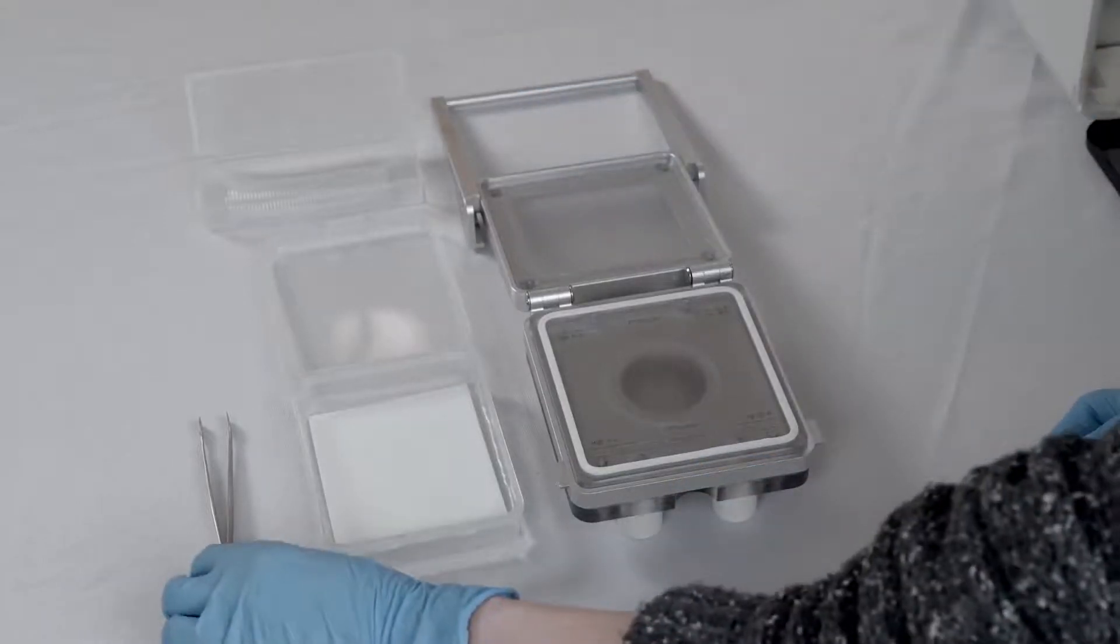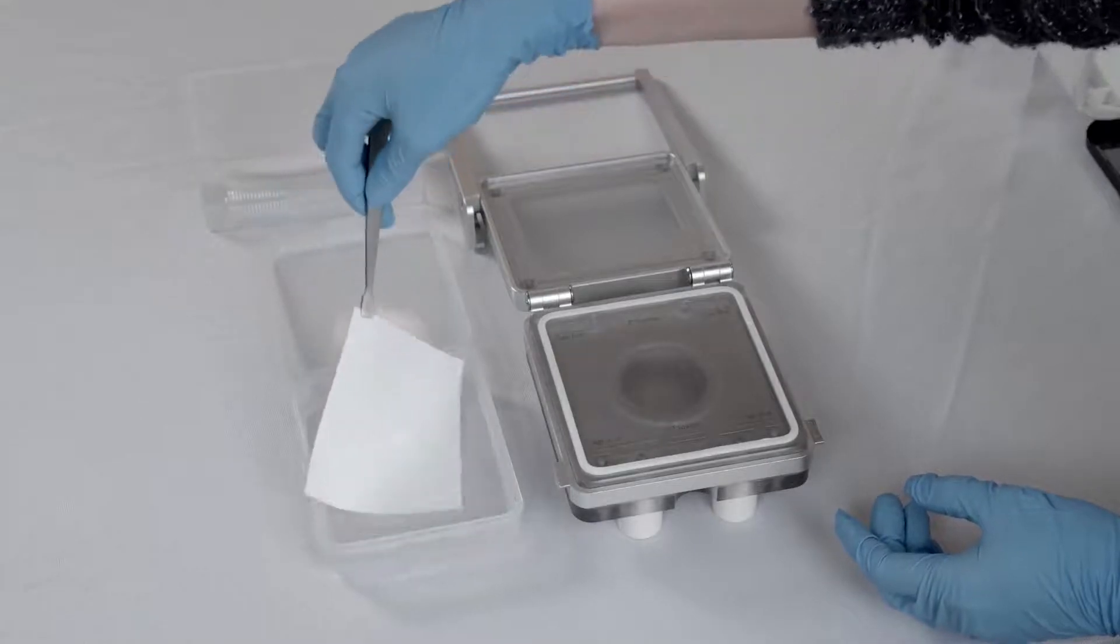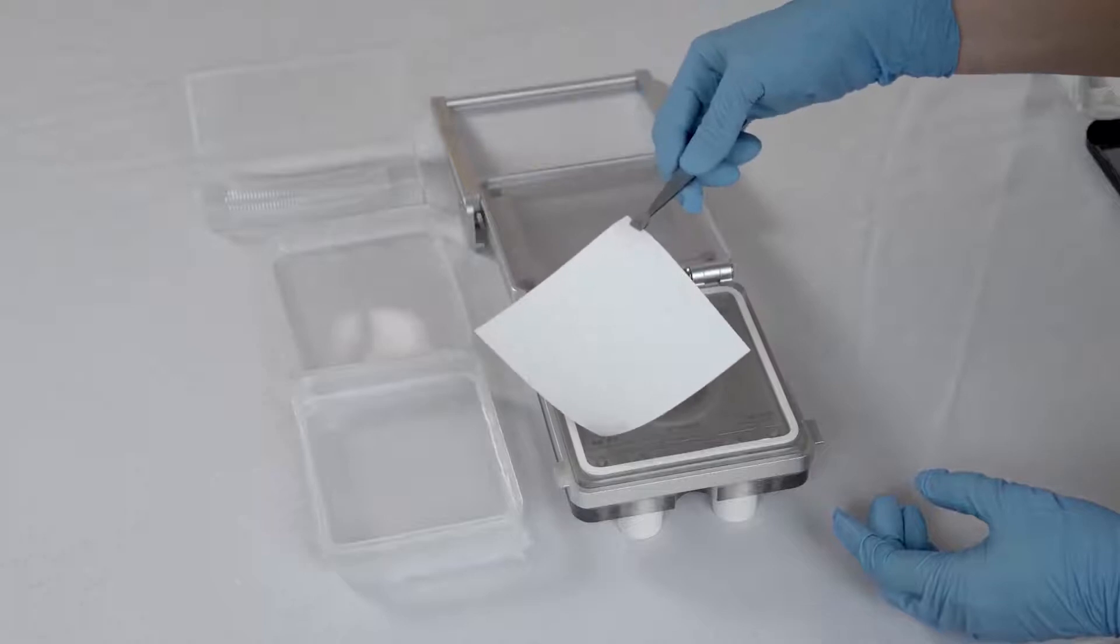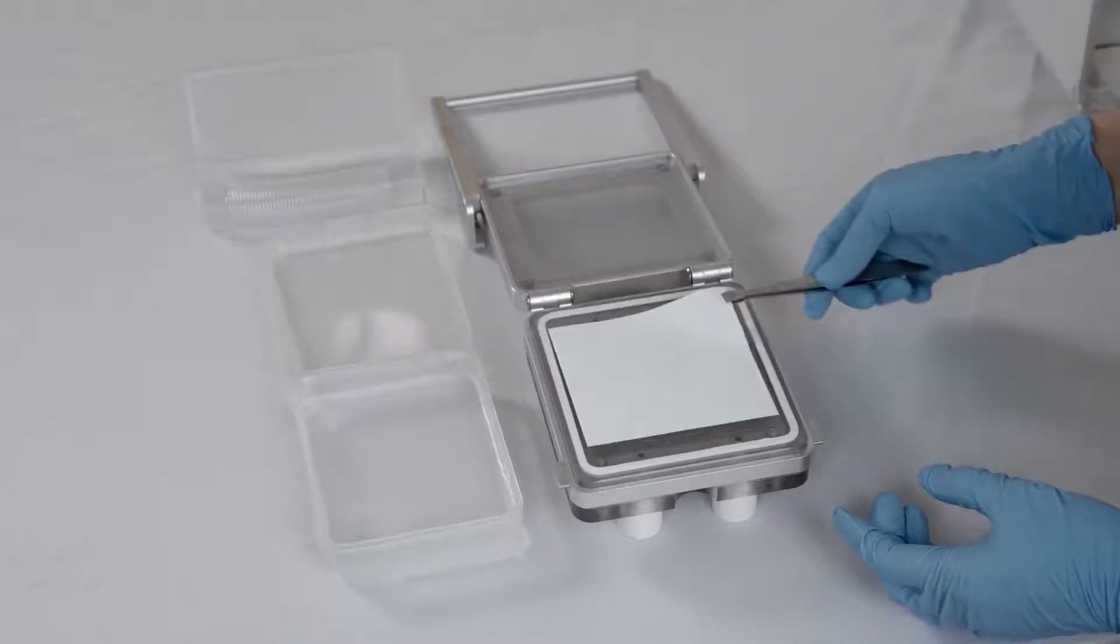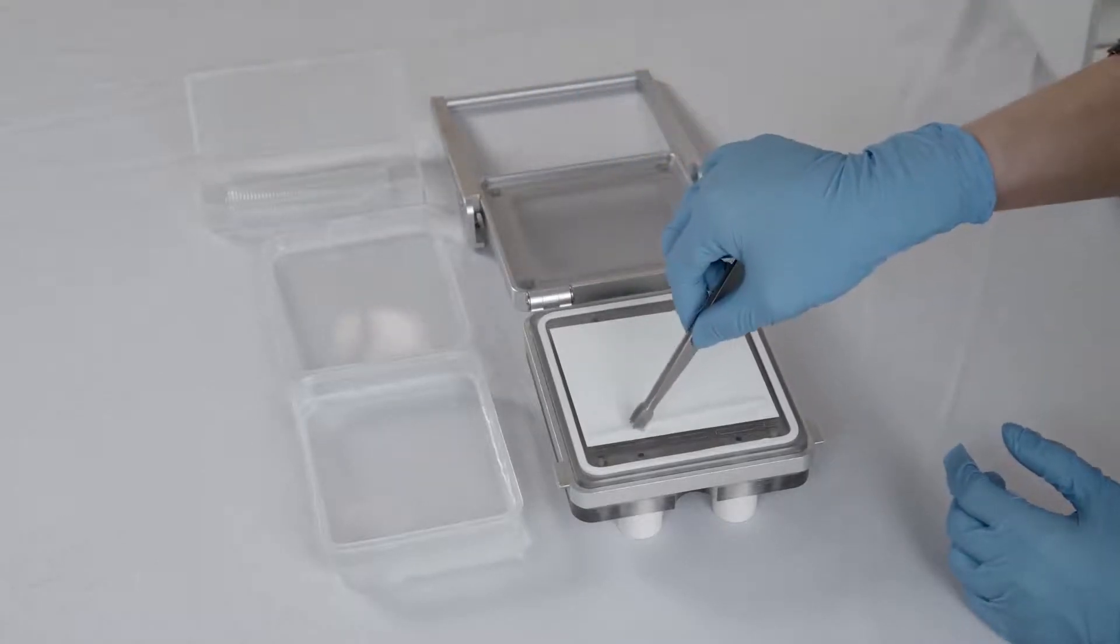Align the membrane with bands facing up on the cassette in the orientation corresponding to the markings, noting the position for high molecular weight and low molecular weight protein bands. Then place the spacer on top of the membrane. Close the cassette.